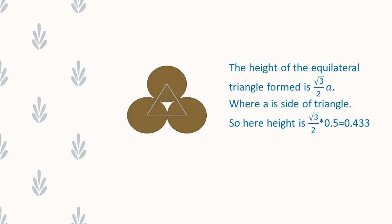If you pick three circles and view, this is how they look like. Let us join the centers of the three circles. Then we get an equilateral triangle. The side of the triangle is equal to the diameter of the circle, which is 0.5 centimeters.